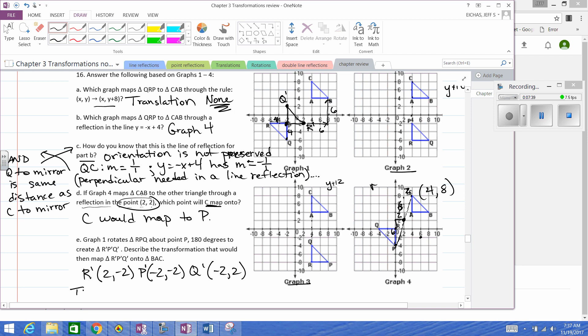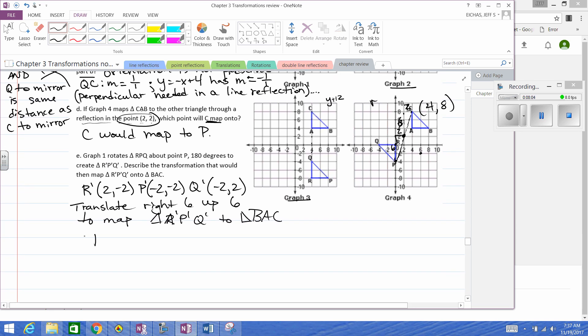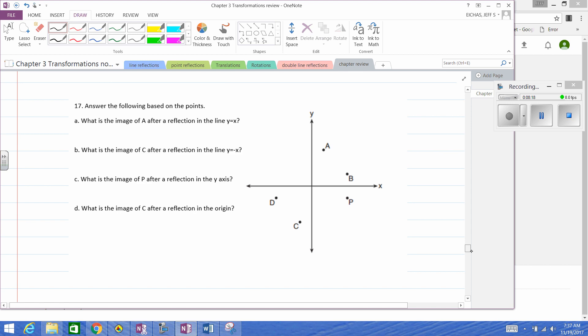Translate right six, up six to map triangle R prime, P prime, Q prime to triangle ABC. All right, good enough, that's a full description. Or you could write it this way. All right, good enough. Next, let's go to 17.